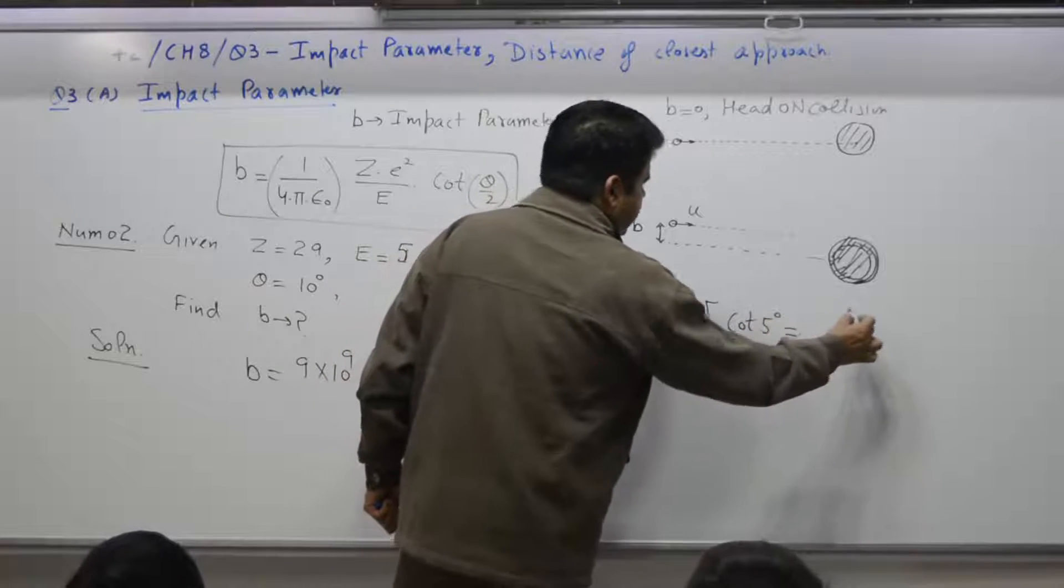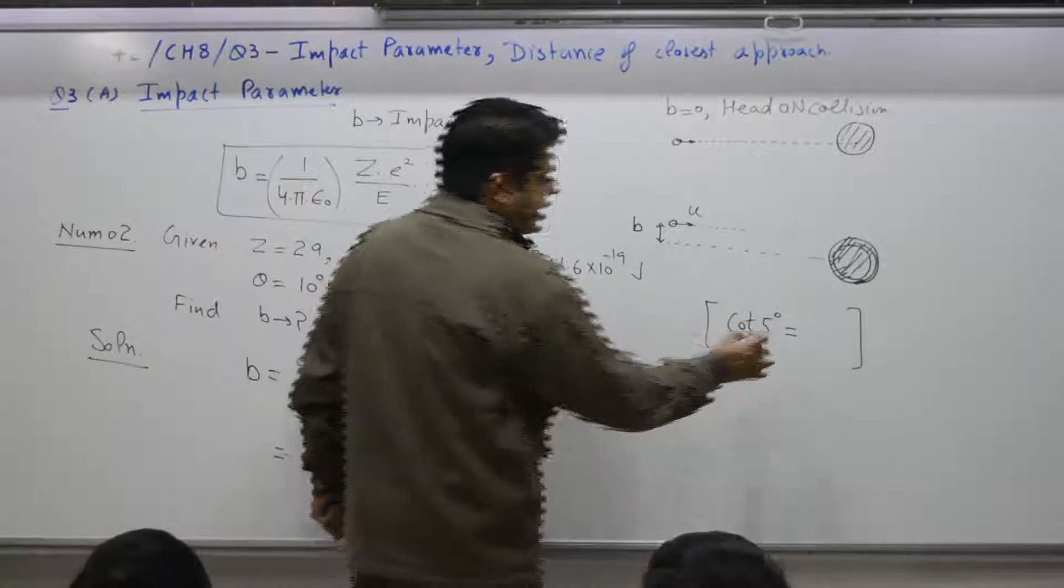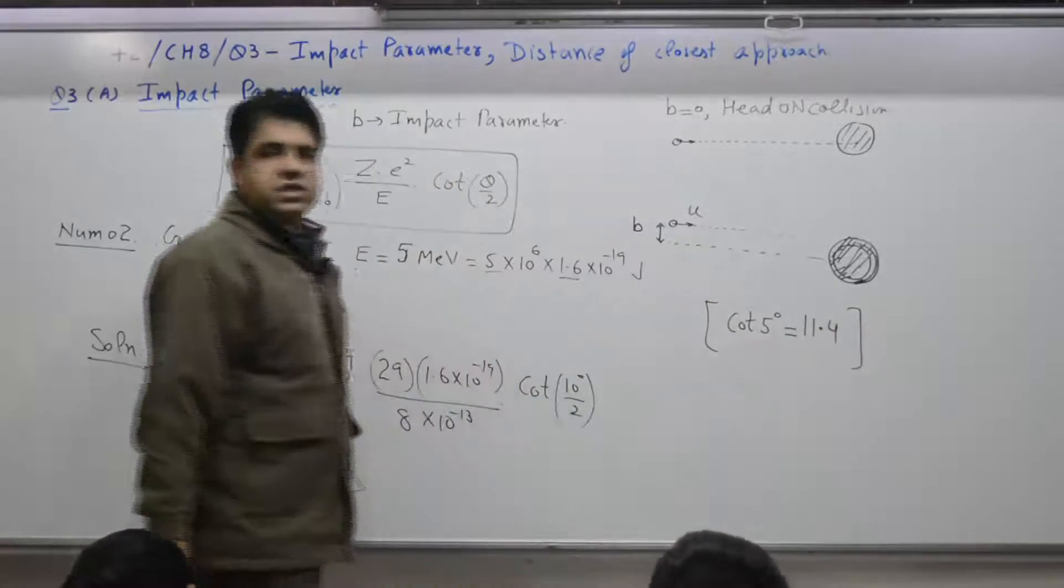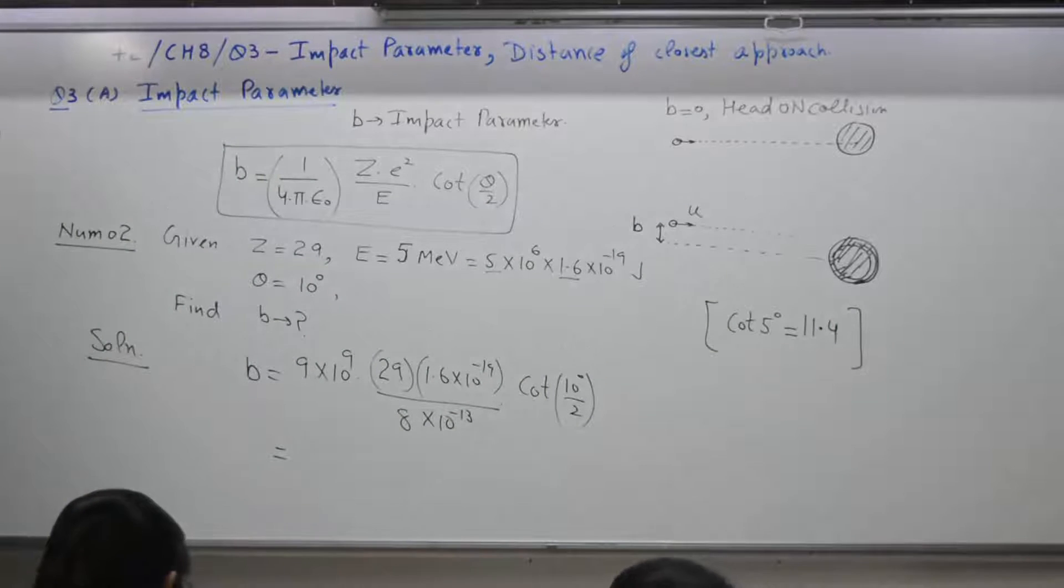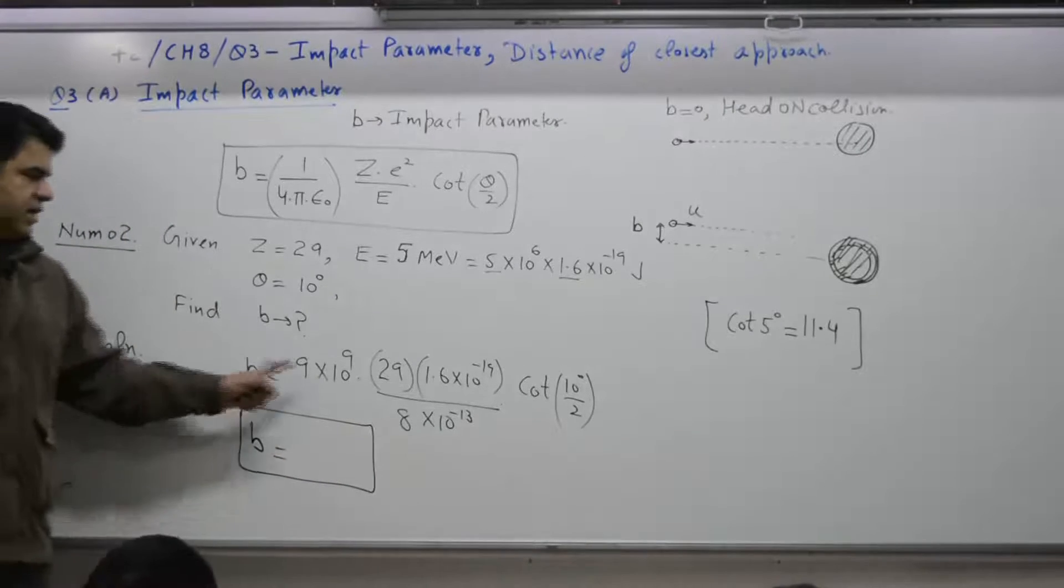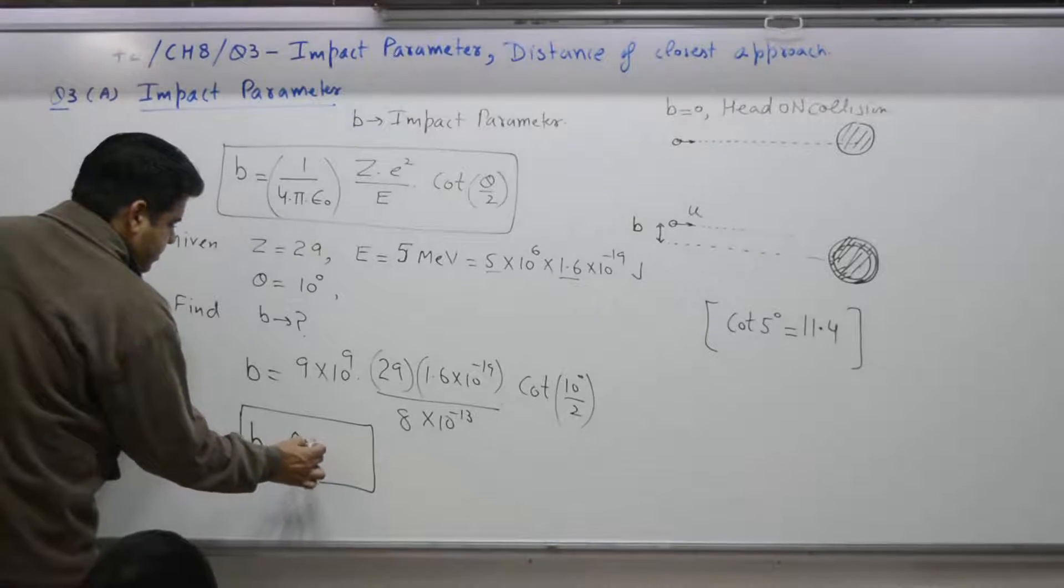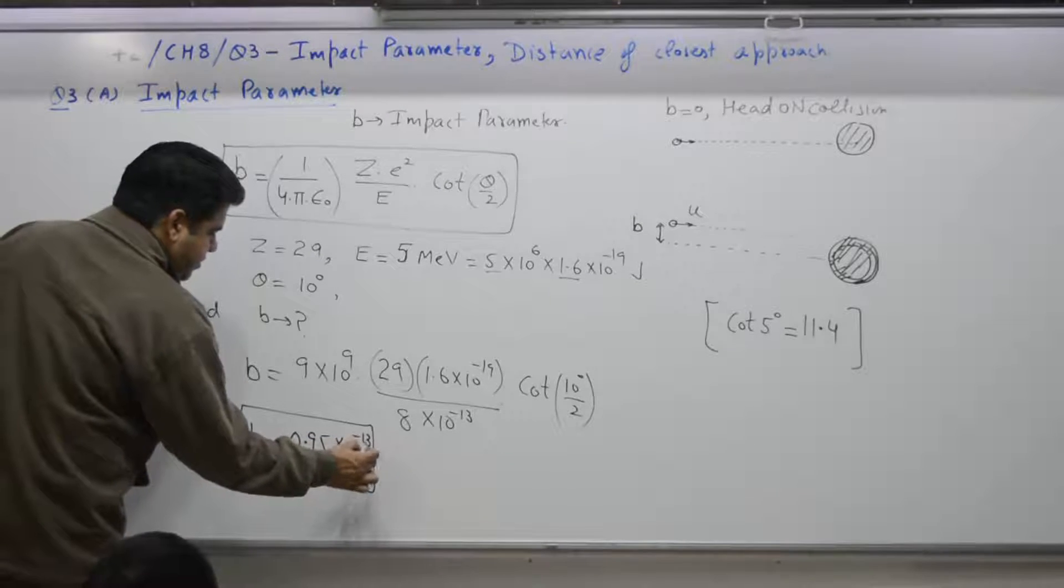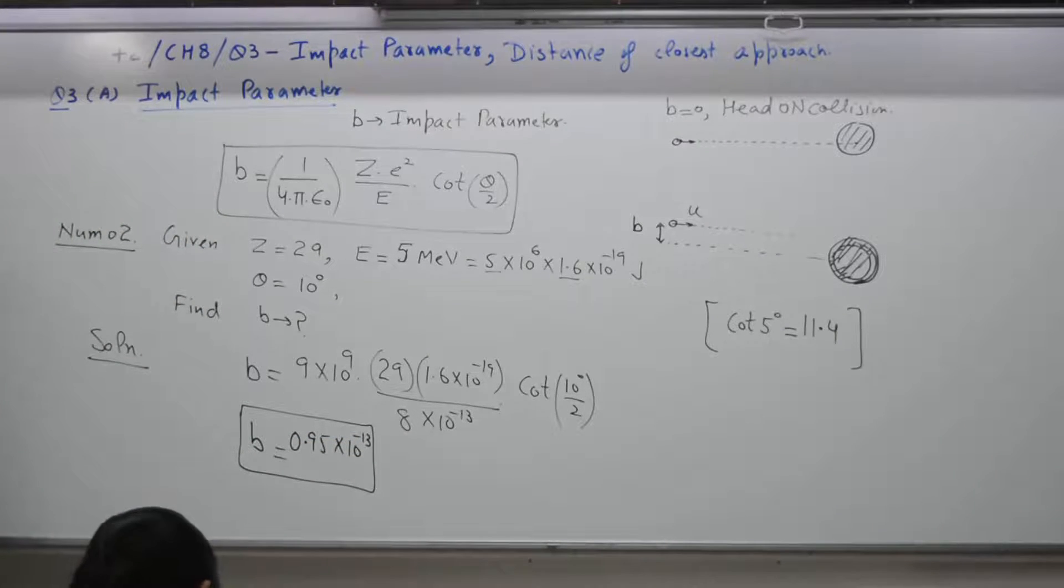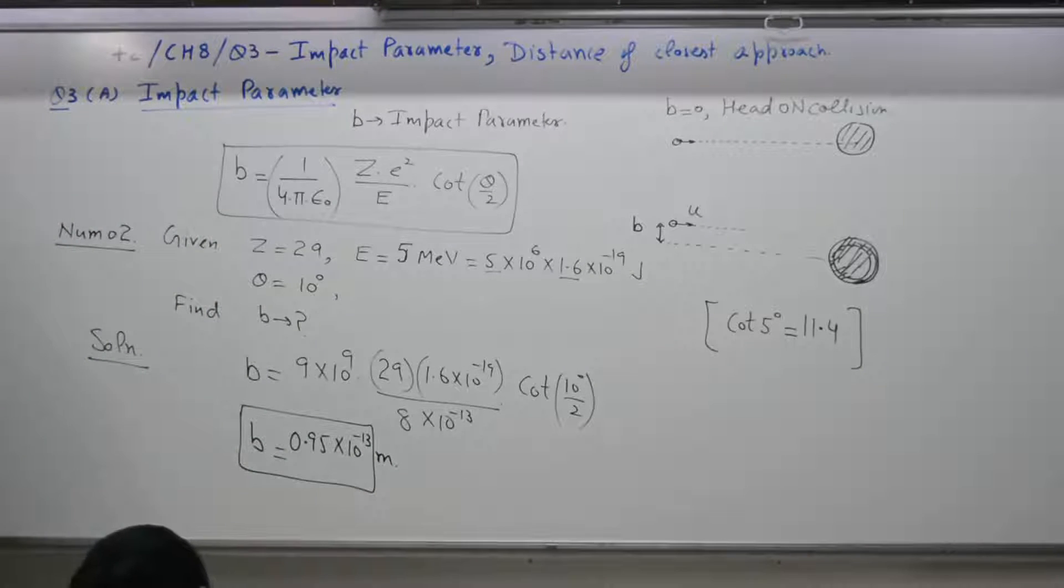Cot 5 degree is yes. What was the value? 11.4. Use this data. Cot 5 degree is 11.4. So, calculate and confirm the answer is 0.95 into 10 to the power minus 13 SI units meter. Two minutes with you for calculation.